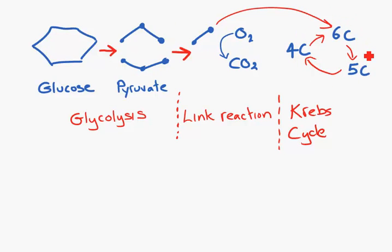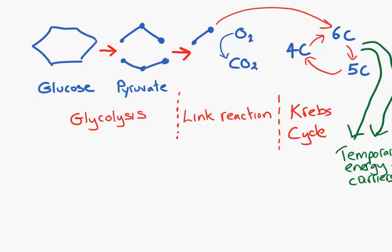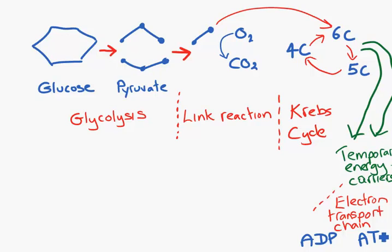This is the Krebs cycle. The purpose of the Krebs cycle is to charge up temporary energy carriers. These temporary energy carriers then go to the electron transport chain, where they are used to charge our ATP, lots of it. We end up with 34 of the 38 ATPs made charged up here in the electron transport chain.